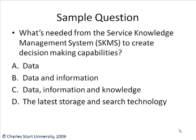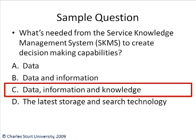Simple question: what's needed from the Service Knowledge Management System, the SKMS, to create decision-making capabilities? Answer A: data. Answer B: data and information. Answer C: data, information, and knowledge. Answer D: the latest storage and search technology. The answer is Answer C. You've got your raw facts — the data — your processed facts into information, and knowledge on how you can apply that information to the business and the environment. Answer C is the most relevant and correct answer.